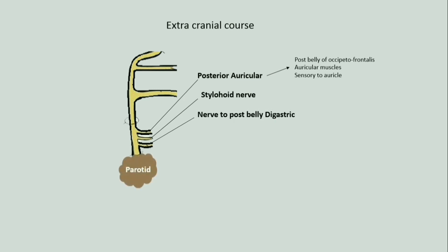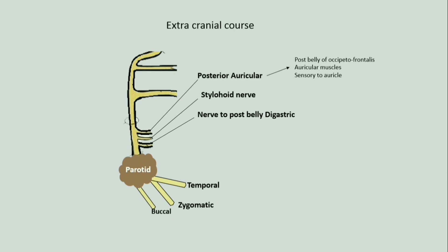The facial nerve ends by terminating into five terminal branches between the superficial and deep parts of the parotid gland. The terminal branches are the temporal, zygomatic, buccal, marginal mandibular, and cervical nerves.